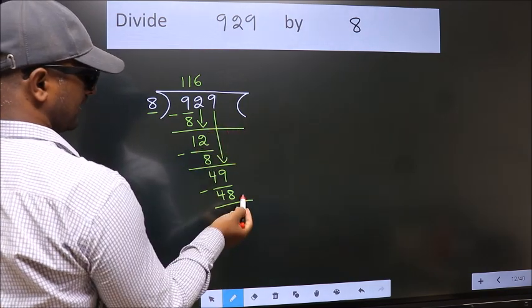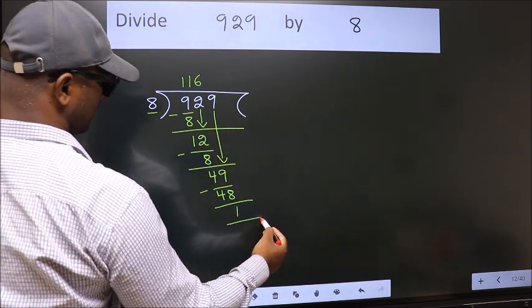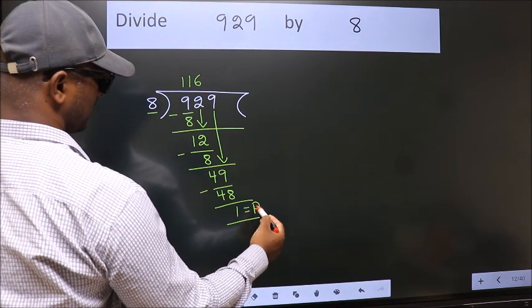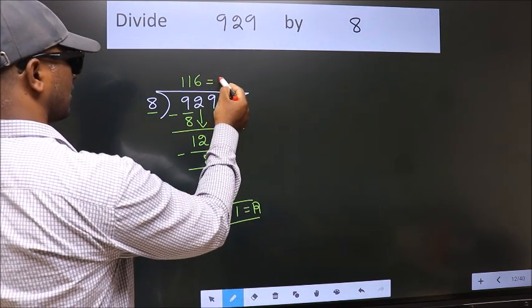No more numbers to bring it down. So we stop here. This is our remainder. This is our quotient.